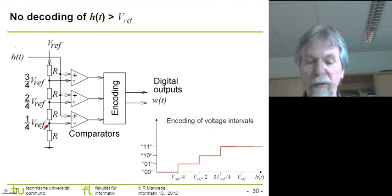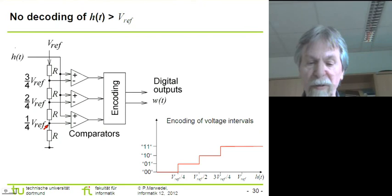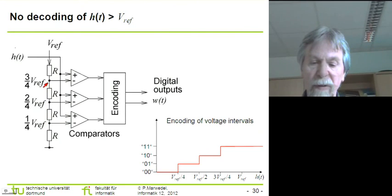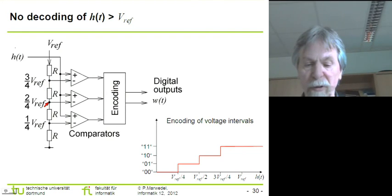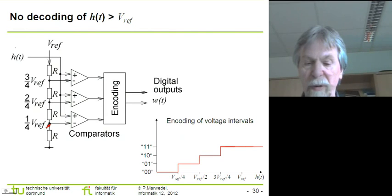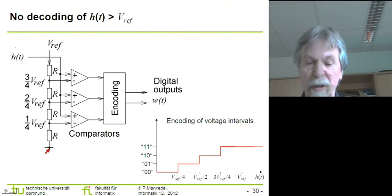In the simple case we are using four resistors. As a result, at this node in the circuit we have three quarters of the reference voltage. Over here we have two quarters of the reference voltage, and over here we have just one quarter of the reference voltage. Down here we have ground level.